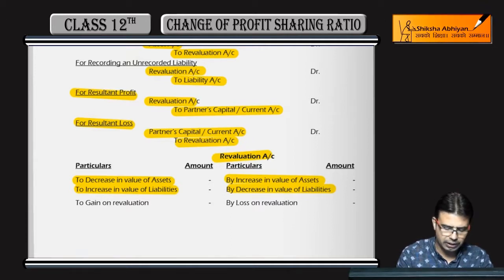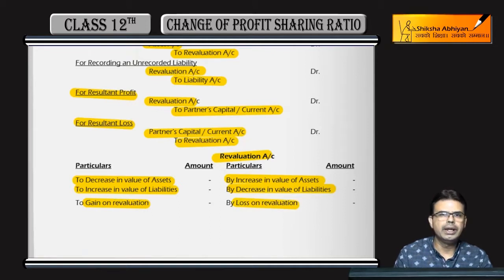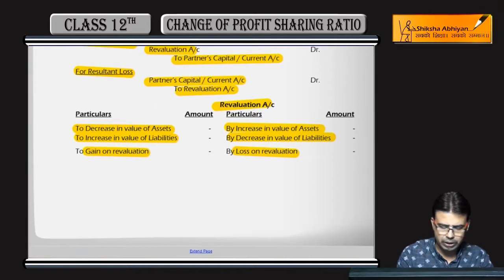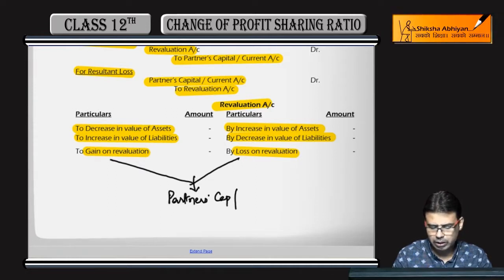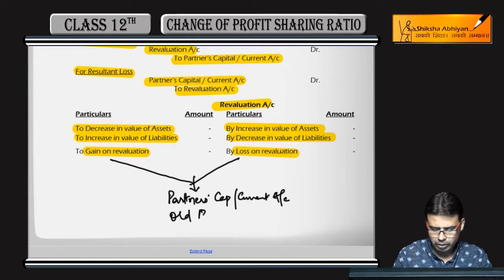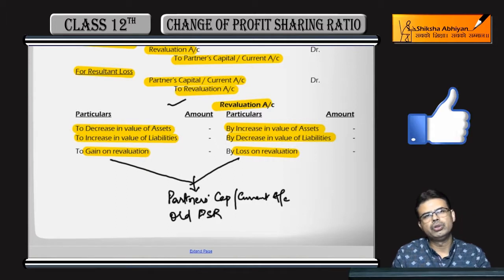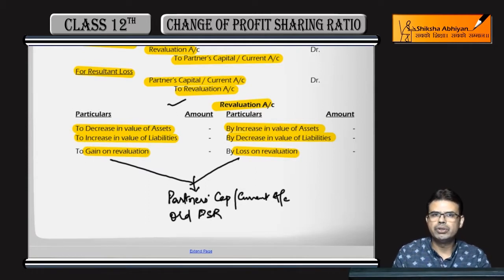Debit all the losses, credit all the gains. If there is a gain or loss, we distribute them in the old profit-sharing ratio. This is the way we will show you the profit-sharing ratio.